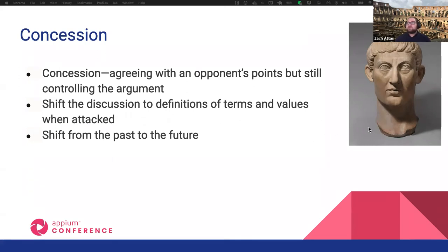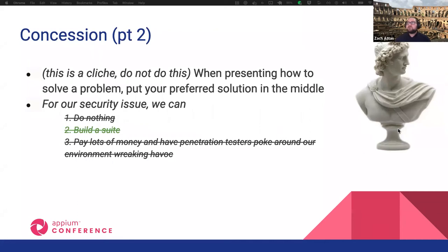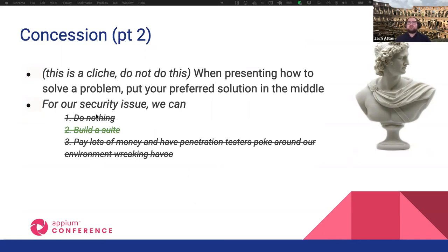I want to warn against the kind of concession you shouldn't use. A lot of blogs might tell you that when presenting how to solve a problem, put your preferred solution in the middle. For example, if there's a security breach: 'we have three options — do nothing, build a security suite, or pay a lot of money for penetration testers.' Since you put yours in the middle, it's clichéd — people will see through that tactic. I think concessions work in a more human manner in a one-on-one conversation. I wouldn't use that three-option framing to put yours in the middle; it's kind of overblown.